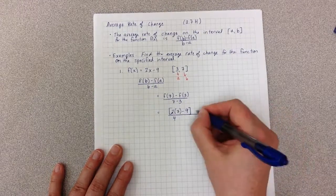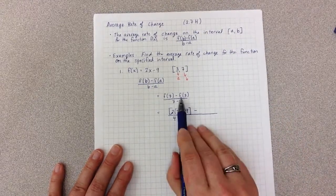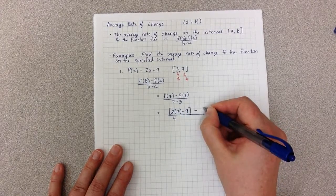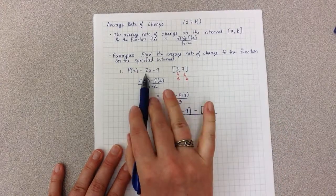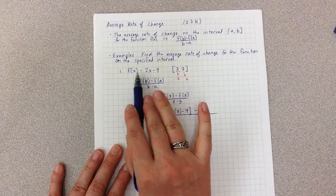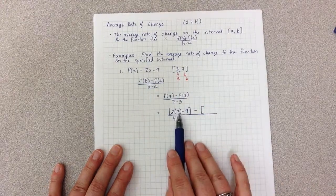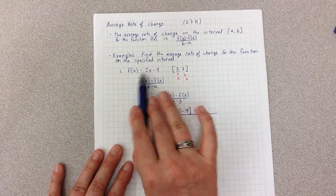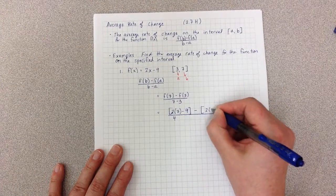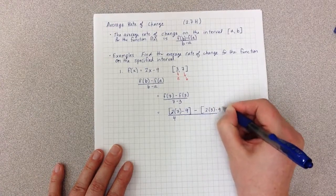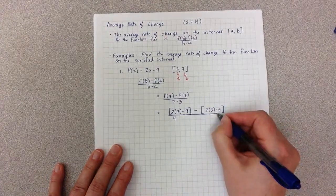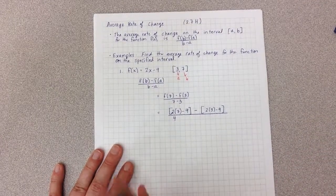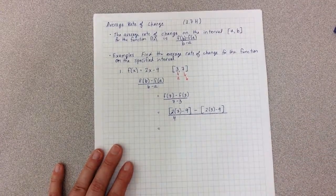I then have subtract and then I have f(3). So I'm going to use the exact same function but instead of putting 7 in for the x, I'm putting 3 in for the x. So 2 times 3 minus 9. And I then simplify. All the numbers are there. I just have to actually now find the final answer.